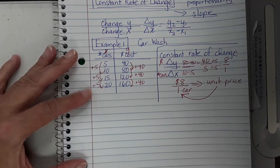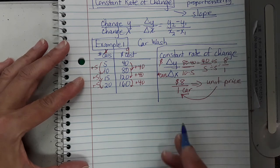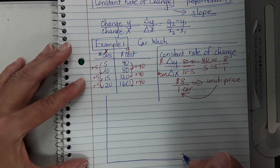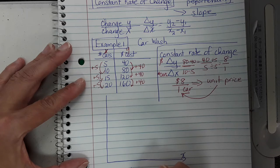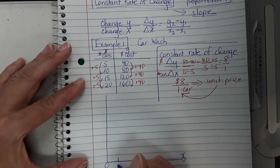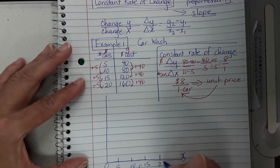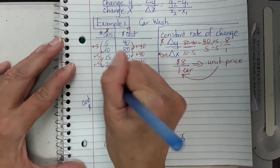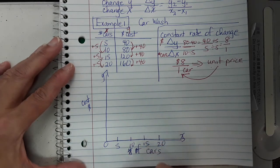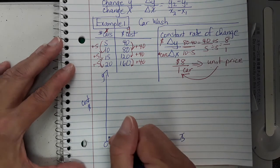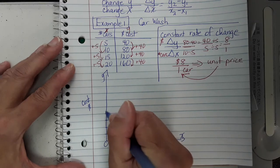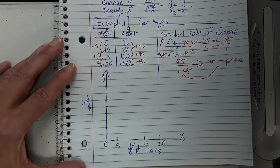Let's also graph this. The X-axis is the number of cars, going by 5s: 0, 5, 10, 15, 20. The Y-axis is cost in dollars. We need to go up to 160, so let's go by 20s: 20, 40, 60, 80, 100, 120, 140, 160.